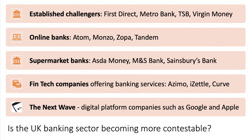However, there is some evidence that the UK commercial banking sector is becoming more contestable — perhaps the barriers to entry are coming down. You have established challengers like First Direct, Metro, TSB, which demerged from Lloyds, and Virgin Money, which bought the Northern Rock branch network. You've also got online-only banks — some of you may know Monzo, Zopa, and Tandem.